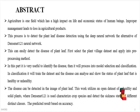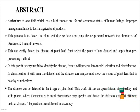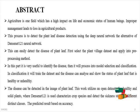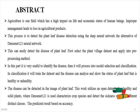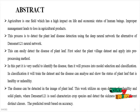The abstract of the project: Agriculture is one field which has a high impact on the life and economic status of human beings. Improper management leads to loss in agriculture products. This process is to detect plant disease using deep neural network, specifically the DenseNet-121 neural network, which can easily detect the disease of plants.